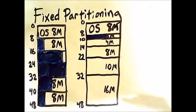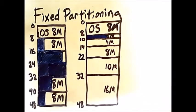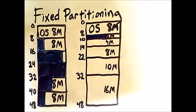If we get a process that is larger than 8 megabytes, which this system could not handle, we can put it in either the 10 megabyte or 16 megabyte partition, depending on how large it is.